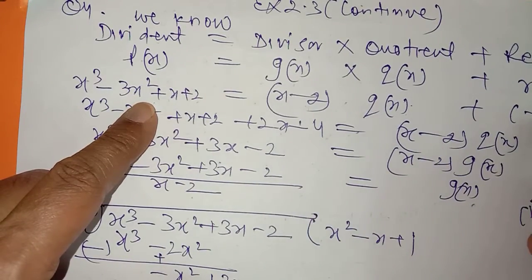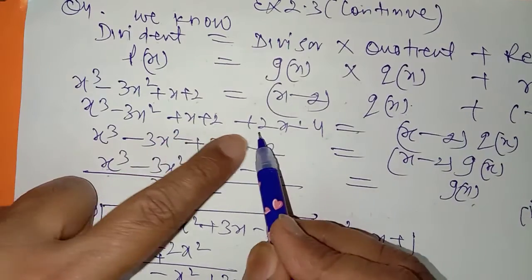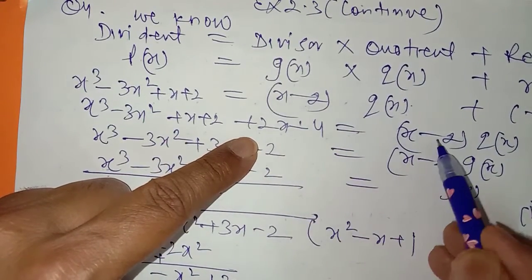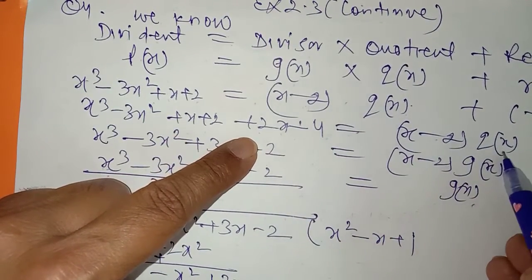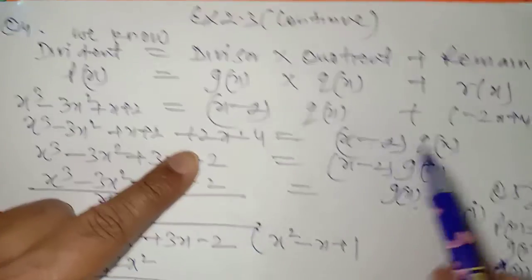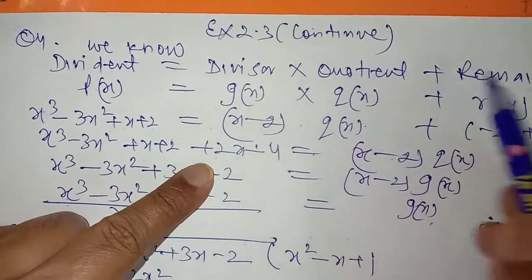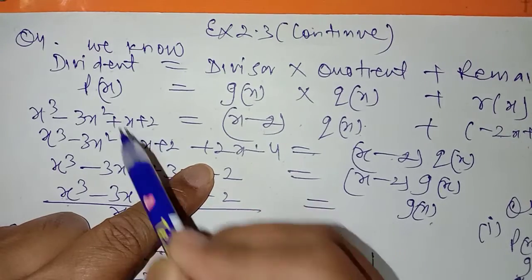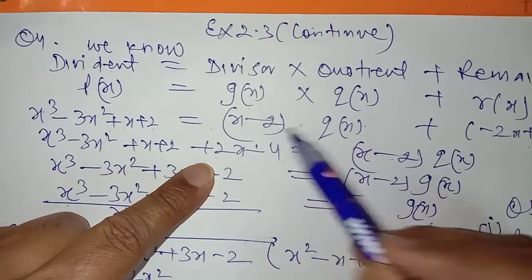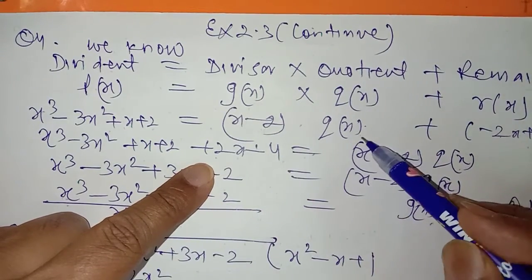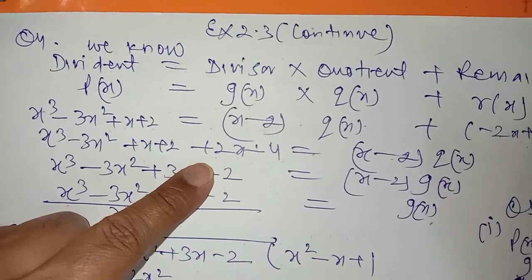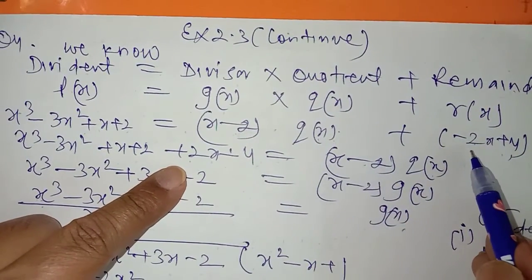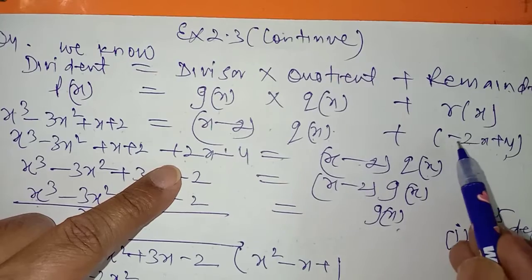دھیان سے دیکھو — یہ minus کا ہے، ادھر آکے plus کا 2x ہو گیا، ادھر آکے minus کا 2x ہو گیا، یہ as it is رہا۔ dividend is equal to divisor into quotient plus remainder۔ جس کو divide کر رہے ہیں وہ dividend، جس سے divide کر رہے ہیں وہ divisor، quotient پتہ کرنا ہے، remainder دے رکھا ہے۔ Simple algebra use کریں۔